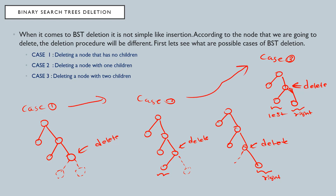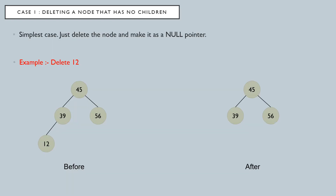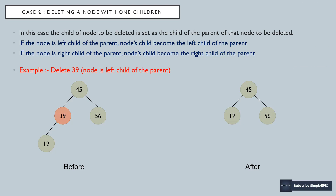Let's look at the algorithm. I'm not going to explain the algorithm directly — first I will explain the cases, then come back to the algorithm, because that will be easier. For case one, as I said, there are no children. Suppose I am going to delete node 12; since 12 has no children, I can just delete it — simply delete such a leaf node.